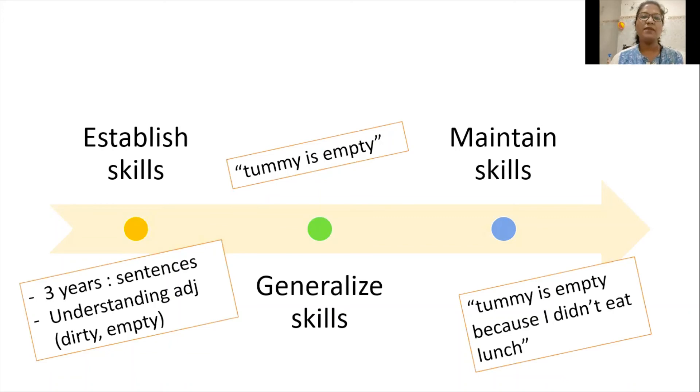By saying that 'I'm hungry, my tummy is empty, this bus is big, this bus is so noisy' - these kinds of sentences with adjectives and prepositions should also - you should teach your child all this in everyday life.